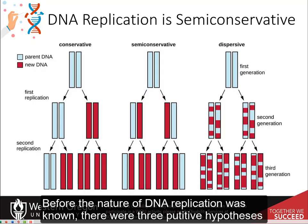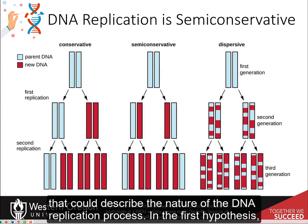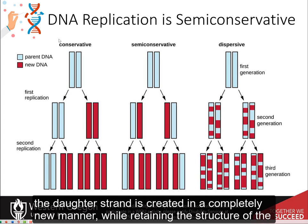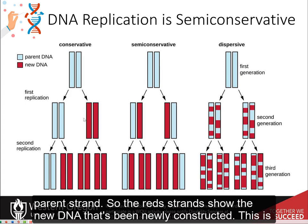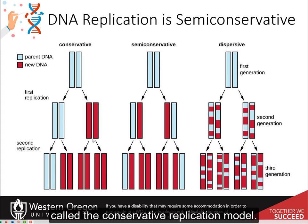Before the nature of DNA replication was known, there were three putative hypotheses that could describe the nature of the DNA replication process. In the first hypothesis, the daughter strand is created in a completely new manner while retaining the structure of the parent strand. The red strands show the new DNA that has been newly constructed. This is called the conservative replication model.